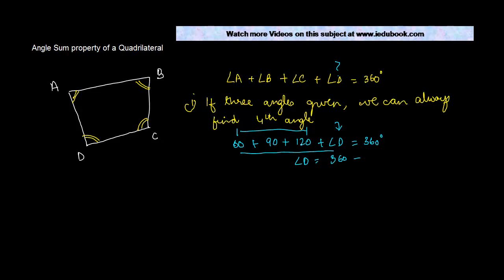60 plus 90 is 150, 150 plus 120 is 270 degrees, 360 minus 270 is 90 degrees. So angle D is equal to 90 degrees.